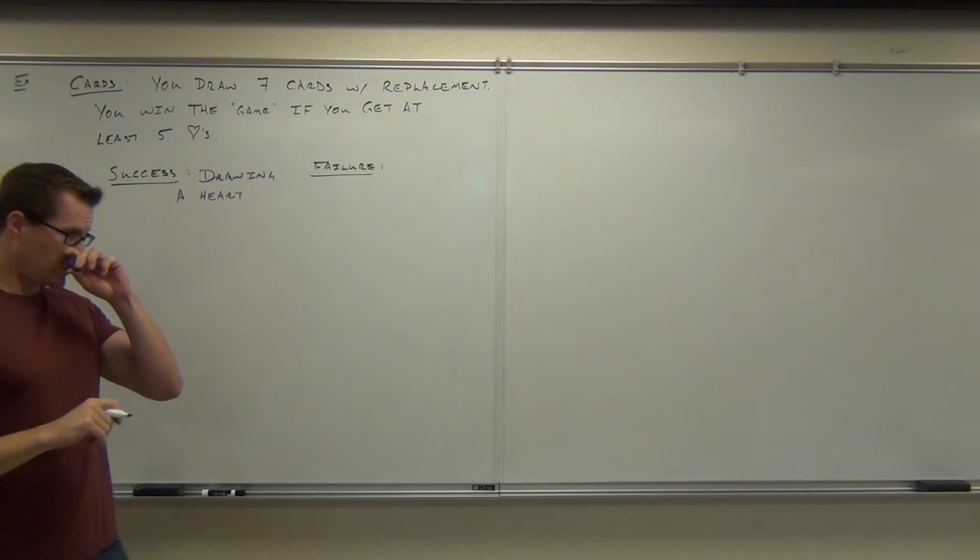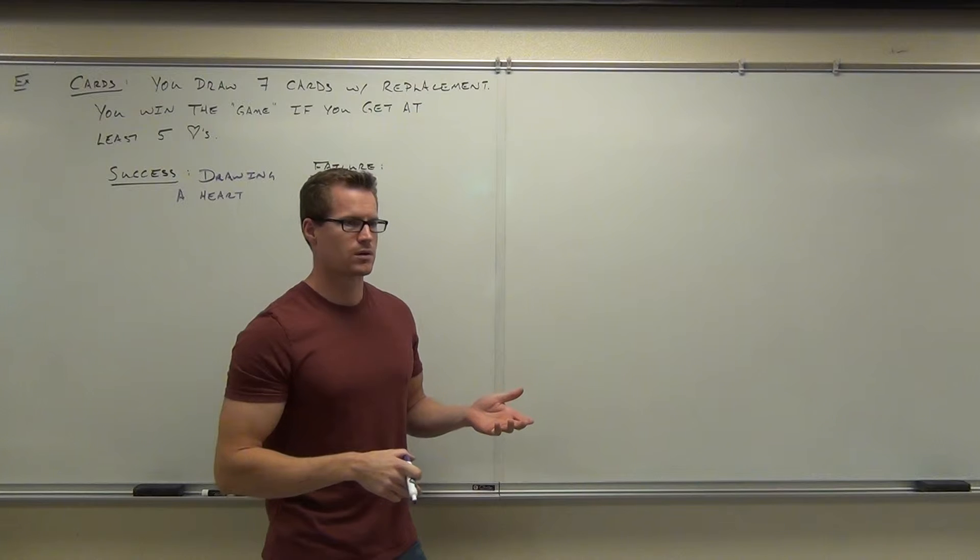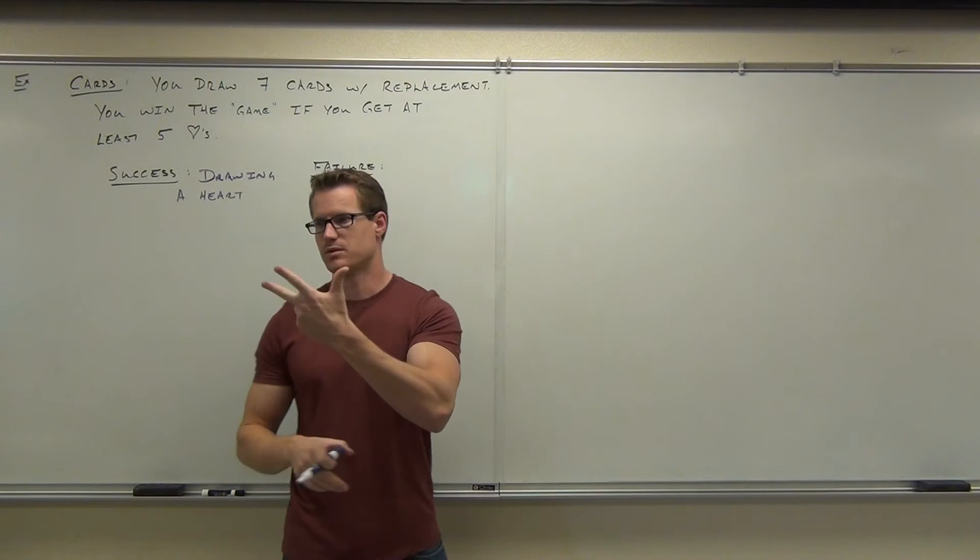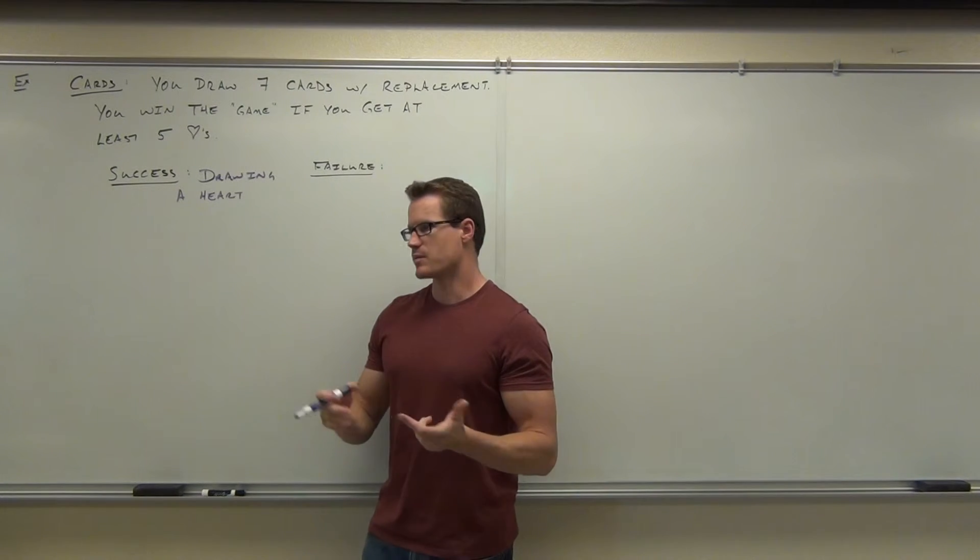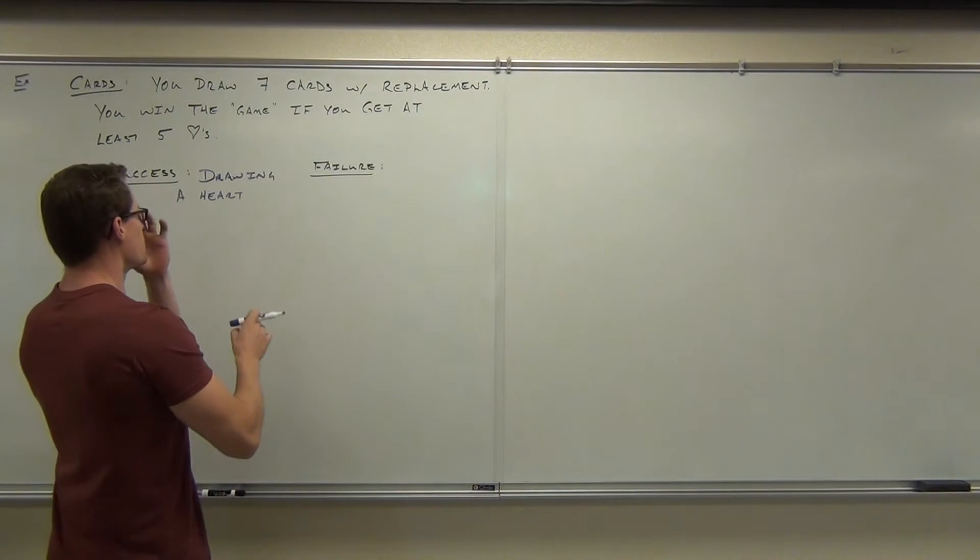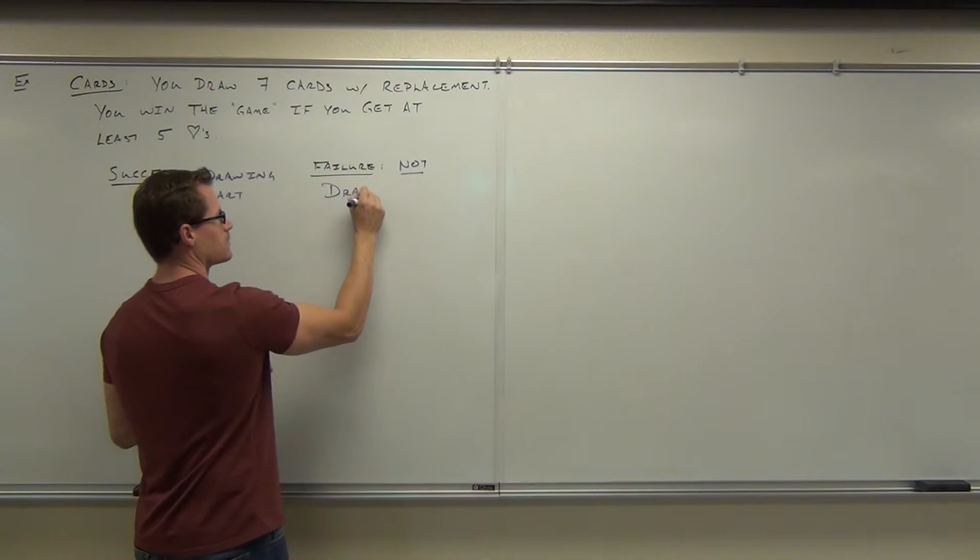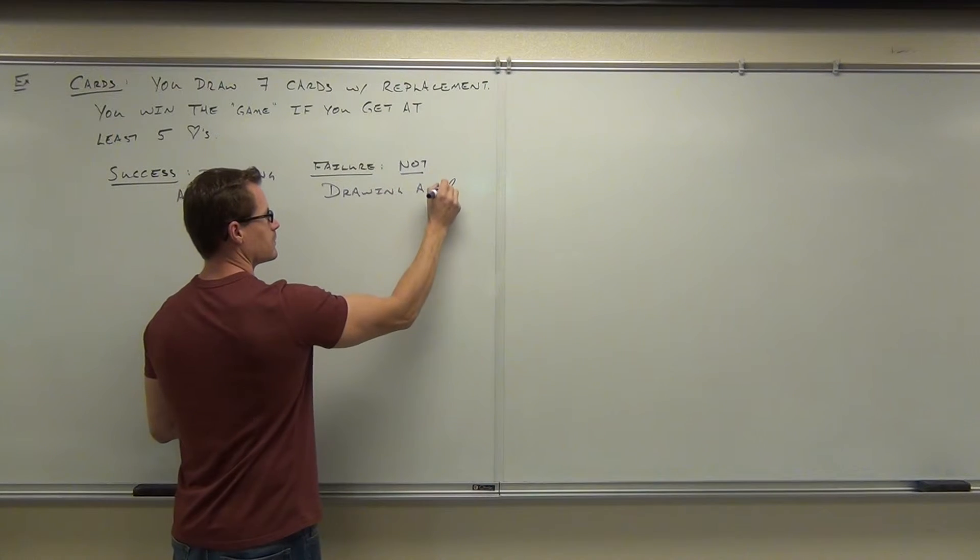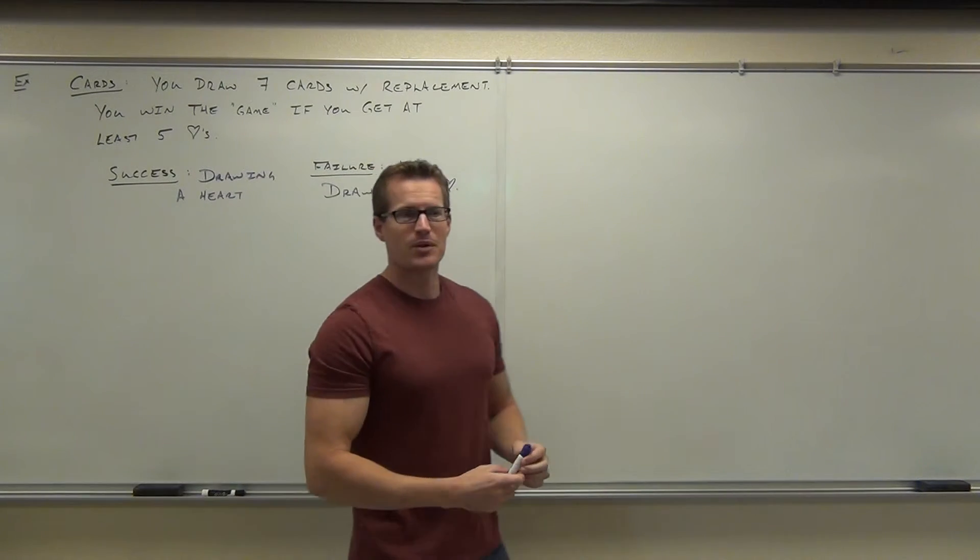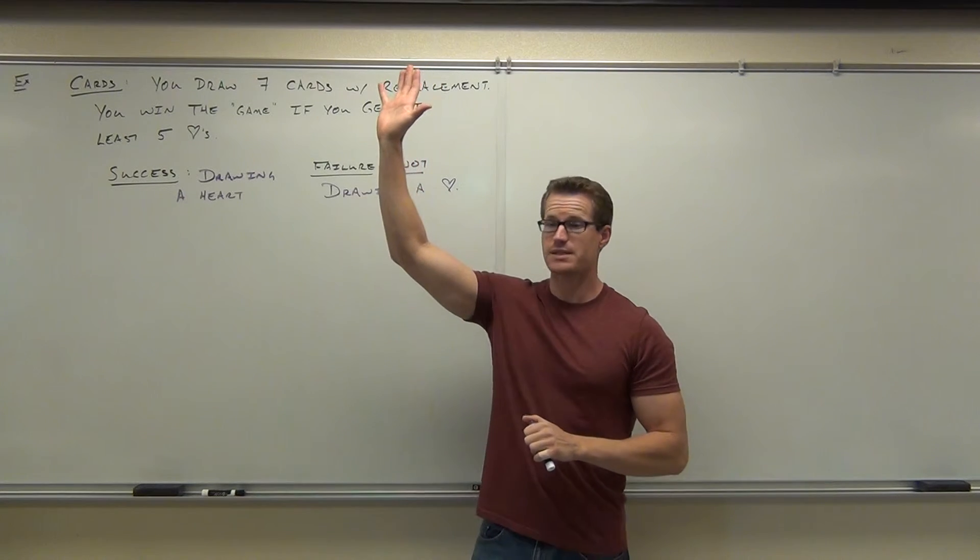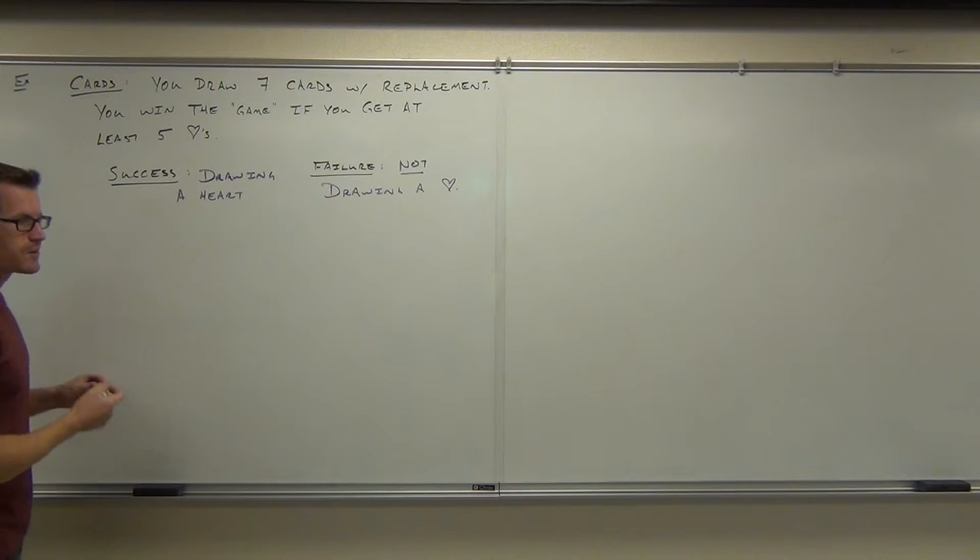A success is drawing a heart. That is a success. What is a failure then? Not drawing a heart, or what are the other three suits? Club, spade, and diamond. A failure would be not drawing a heart. That would be the easiest way to say it. Or you could say drawing a club, diamond, spade. Either way is fine, because those are complementary. Now that we've identified a success and a failure, we can go ahead and figure out all this other stuff.